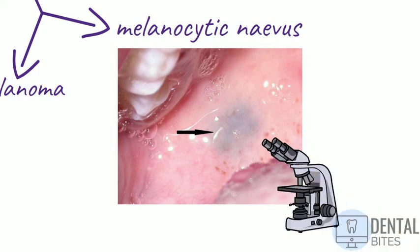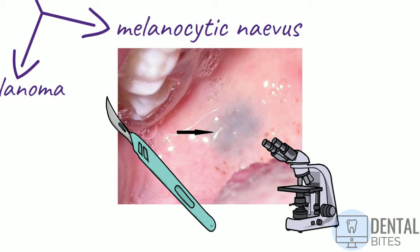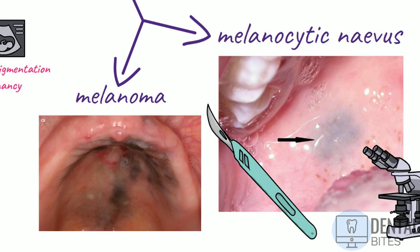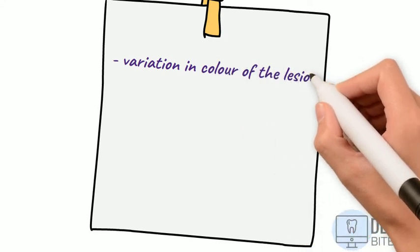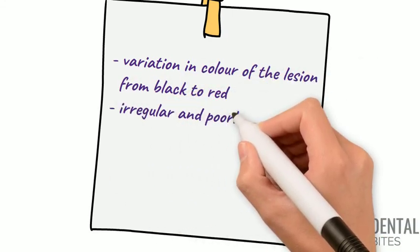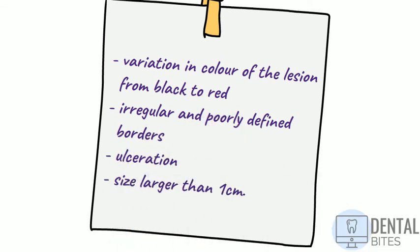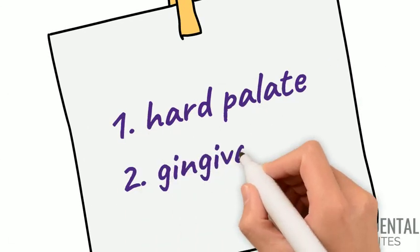All nevi should be biopsied to establish the diagnosis. Since they're typically small, they are usually excised. And finally, melanomas, which are a proliferation of malignant melanocytes and make up less than one percent of all oral malignancies, so they are considered to be rare. Some features that suggest a melanoma include: variation in color of the lesion from black to red, irregular and poorly defined borders, ulceration, and a size larger than one centimeter. The most common sites for melanomas are the hard palate followed by the gingiva.